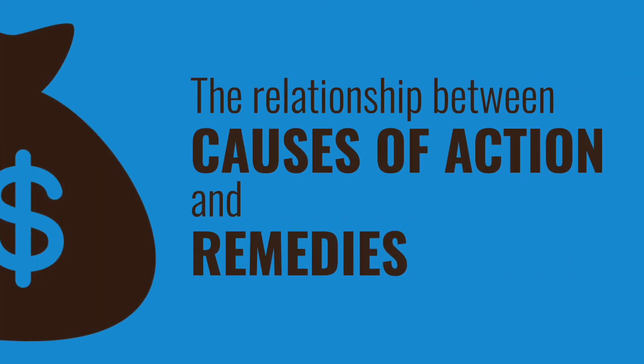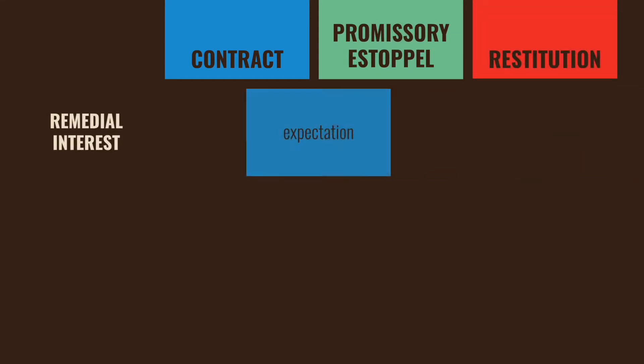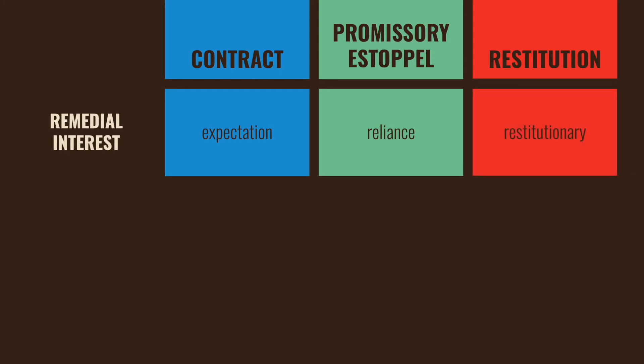Before we jump into the specifics, let's see how these causes of action relate to the remedies that are typically given. We've got these three causes of action, and we want to think about what is the interest we're seeking to vindicate in each case. With a contract, it's an expectation interest. When the injured party is suing for breach of contract, they're seeking the court to put them where they expected to be if the promisor had followed through on what was promised. Typically, this is going to be the biggest and best recovery for the promisee to seek.